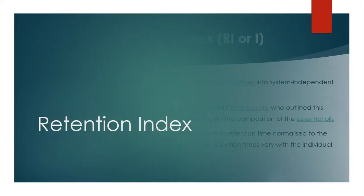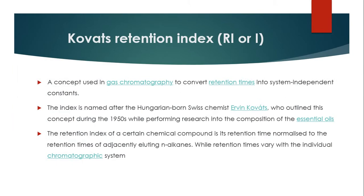The Kovats Retention Index is a concept used in gas chromatography to convert retention times into system-independent constants. The index is named after the Hungarian-born Swiss chemist Irvin Kovats, who outlined this concept during the 1950s while performing research into the composition of essential oils. The retention index of a chemical compound is its retention time normalized to the retention times of adjacently eluting n-alkanes, while retention times vary with the individual chromatographic system.